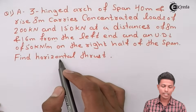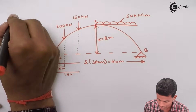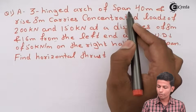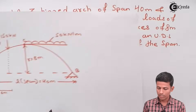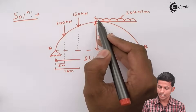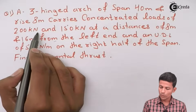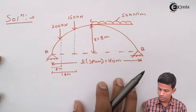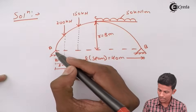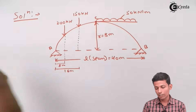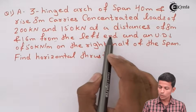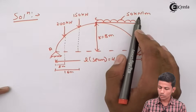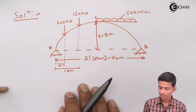First we draw the diagram. The span is 40 meters and rise is 8 meters. The 200 kN load is at 8 meters from the left end, the 150 kN load is at 16 meters from the left end, and the UDL of 50 kN/m acts on the right half of the span.